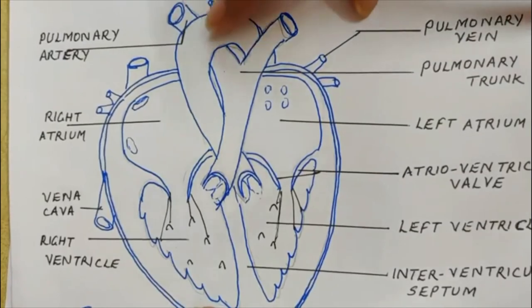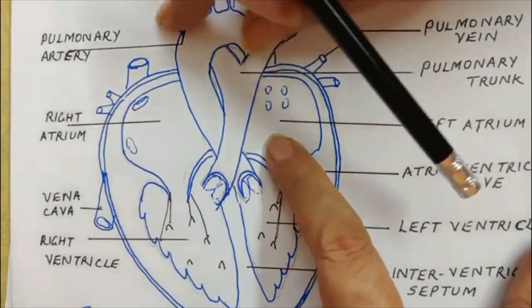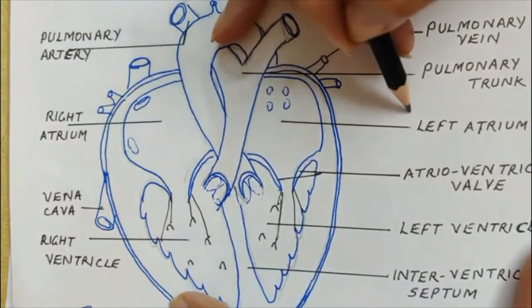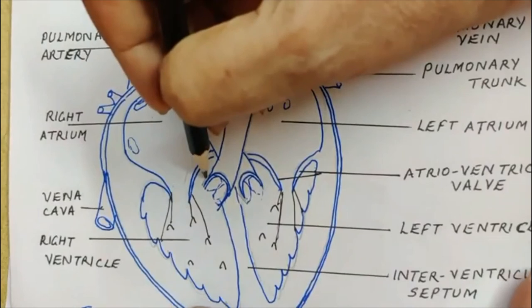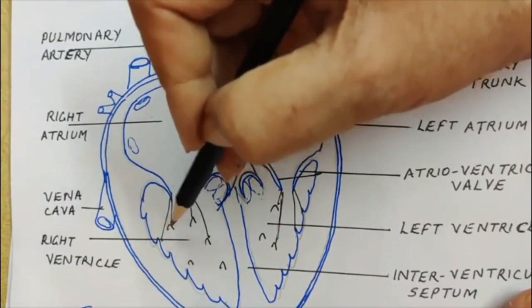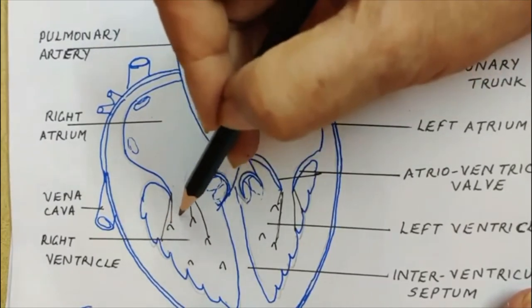This is the pulmonary artery, one of them. This is the second one. This is the pulmonary trunk. Then I've shown you the right atrium. This is the left atrium. These are the valves. Okay, I didn't show you in my picture.